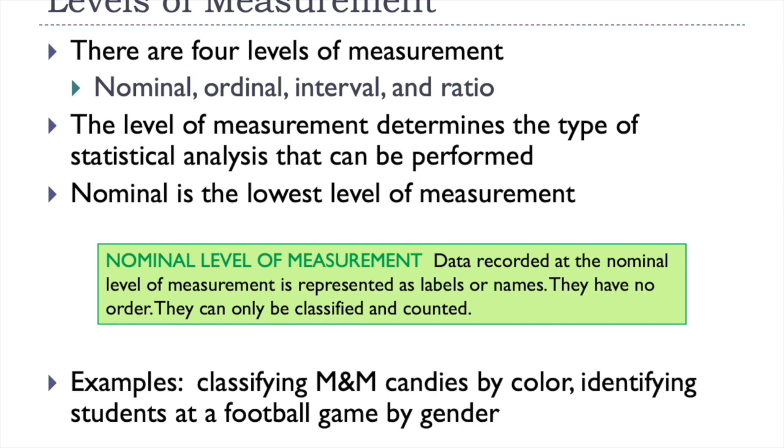Nominal is the basic. It's the lowest level of measurement. And it's typically data that's represented as labels or names. And there's no order to this. It can only be classified and counted. So again, like my M&M example earlier, we have 10 reds in the bag. We have 12 orange M&Ms. But there's really no meaning to those things. Other than we're just giving a total number that we have. Unless you have a preference, I guess. And then that would be a personal preference on how many M&Ms we have of each color.